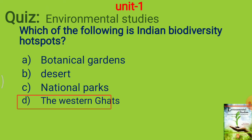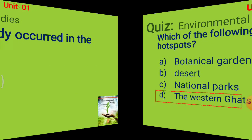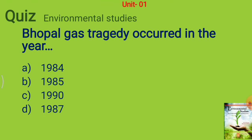Bhopal gas tragedy occurred in the year dash dash — options are 1984, 1985, 1990, or 1987. The answer is 1984.